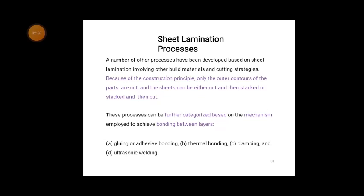A number of other processes have been developed based on the sheet lamination principle, involving different build materials and cutting strategies. Because of this construction principle, only the outer contour of the parts is cut. The sheet can be either cut and then stacked, or stacked and then cut. The processes are further classified by their bonding method: adhesive bonding, thermal bonding, clamping, and ultrasonic welding.